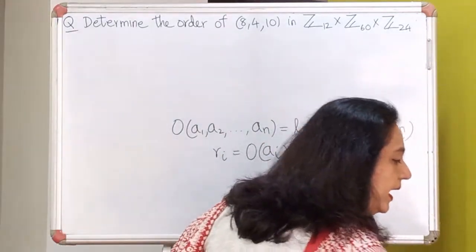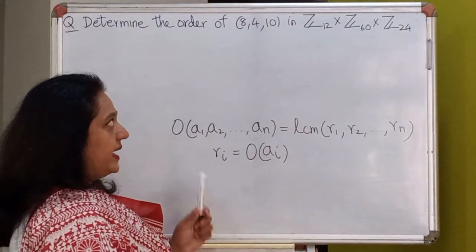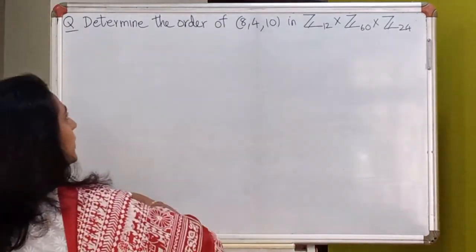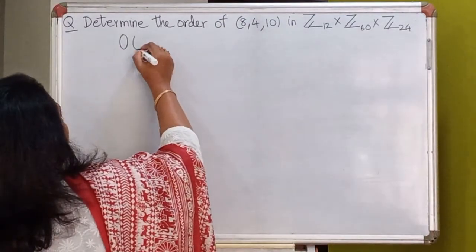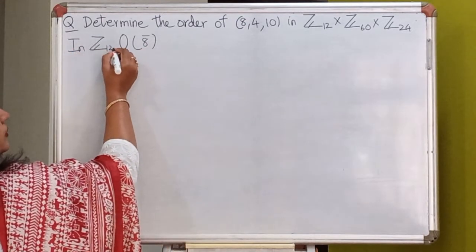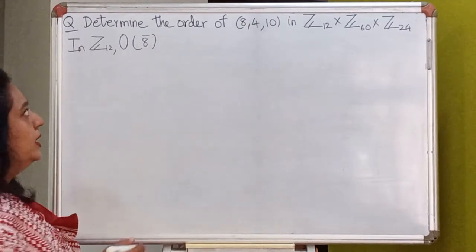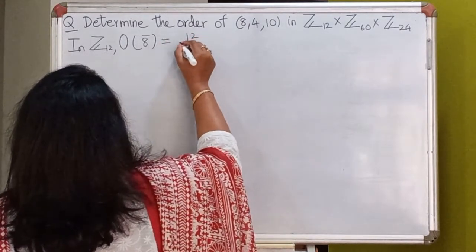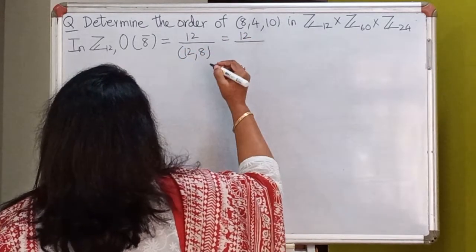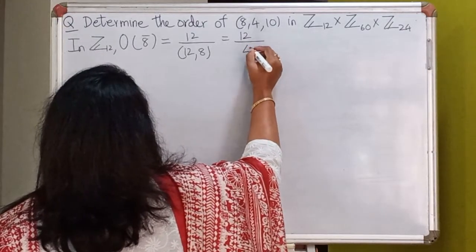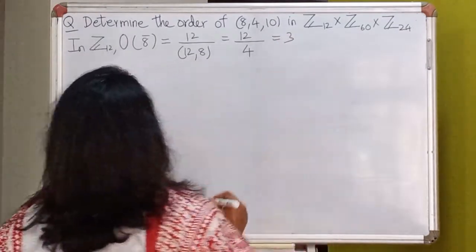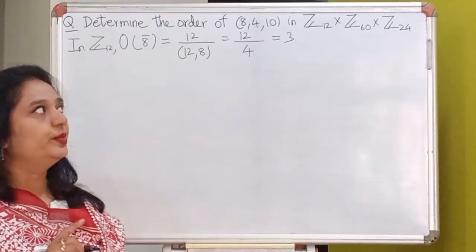It is to be understood that when I write 8, it is the same as 8-bar, because in Z12 I have residue classes. So let's look at the order of 8-bar in Z12. Because this element is coming from the first group Z12, the order of 8-bar will be 12 divided by gcd(12, 8), which is 12 divided by 4, giving us 3. So the order of the first element in the first group is 3.